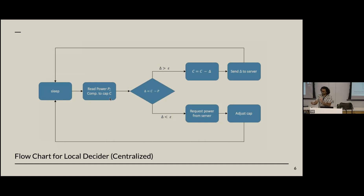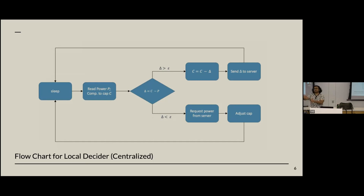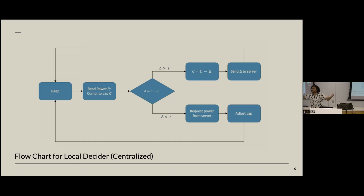A node reads its current power consumption and compares it to its assigned power cap, computing the difference. We set some epsilon error threshold. If the delta is less than that threshold, we say this node is power hungry — it's consuming close to its cap and could benefit from more power — so it sends a request to the server for more power. The server gives it what it can, and the node adjusts its cap. On the other hand, if the delta is greater than this threshold, the node has excess to give: it lowers its cap and sends that excess to the server. By lowering its cap first before sending, we ensure that no system-wide constraints are violated, because we're subtracting before we add.